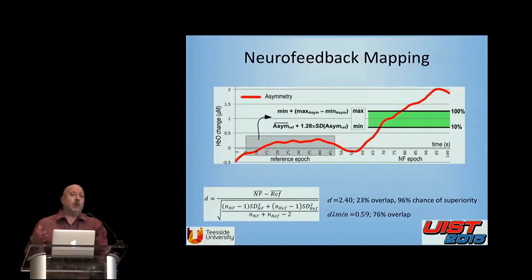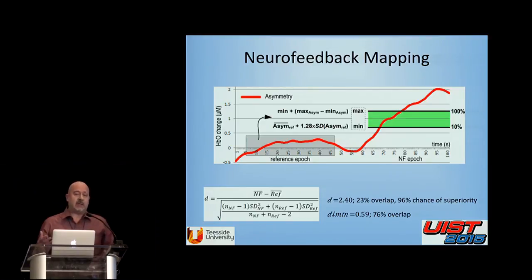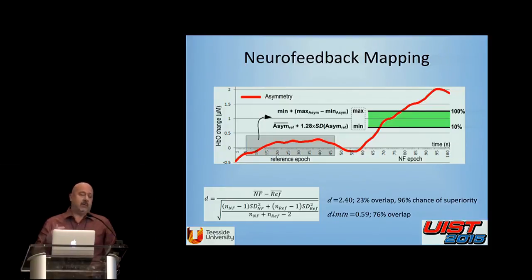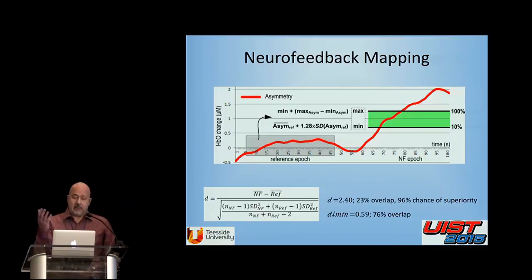That neutral epoch is used for measuring the baseline against which the asymmetry score is calculated. As with all neurofeedback methods, we have a mapping — a decision of by how much you depart from the baseline toward the maximum threshold, which gives the maximum visual feedback output. Once you reach 100%, the bully disappears completely. We use a linear strategy, and we perform real-time statistical testing and convolution in real time to determine the mapping values.